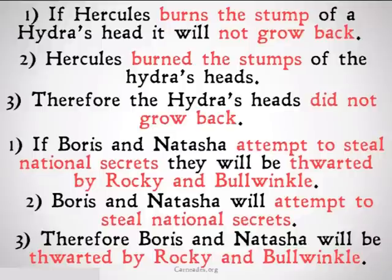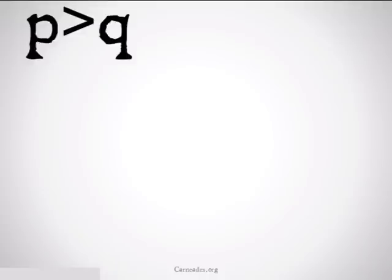Let's take a look at how this looks in terms of truth tables. P implies Q, P, therefore Q.